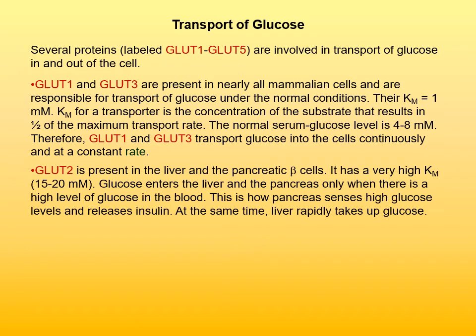GLUT-2 is present in the liver and pancreatic beta cells, and it has a very high Km of about 15 to 20 mmol, which means that under ordinary conditions it doesn't transport much glucose. But when the concentration of glucose is high, GLUT-2 is very active, and glucose enters the liver and in particular the pancreas. That is how the pancreas senses that glucose level is high and releases insulin. At the same time, the liver will be rapidly taking up glucose.